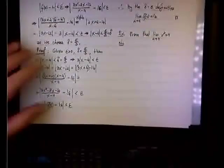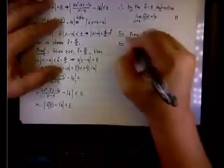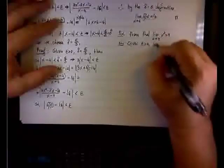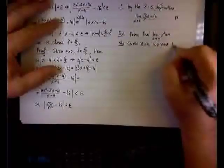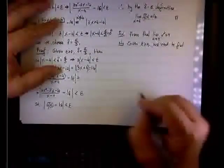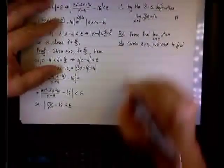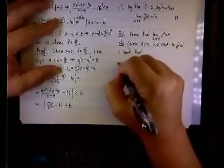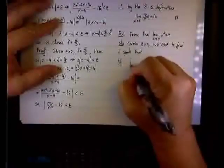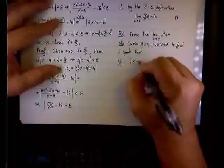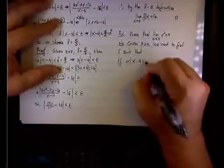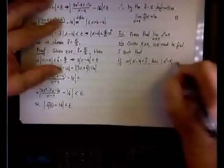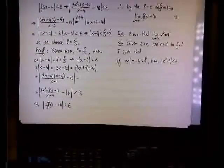Remember, I need to find a suitable delta first. So, given epsilon greater than 0, we need to find delta such that if the absolute value of x minus 3 is greater than 0 but less than delta, then the absolute value of x squared minus 9 is less than that particular epsilon.